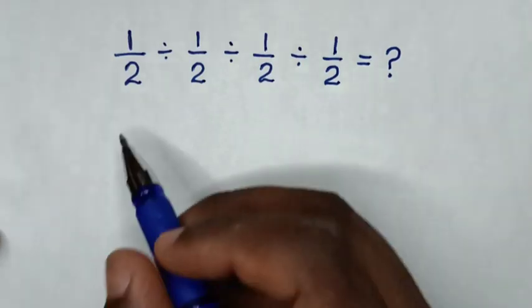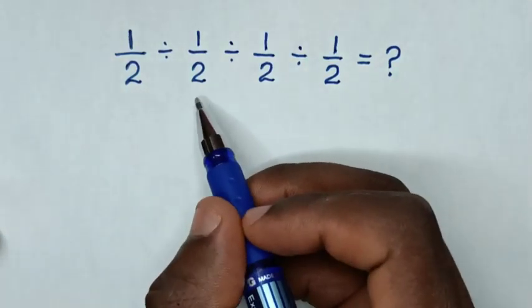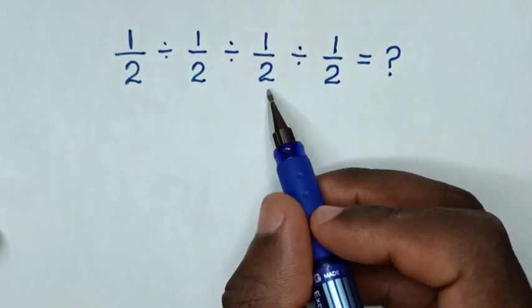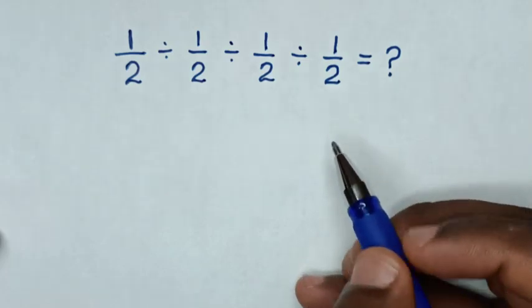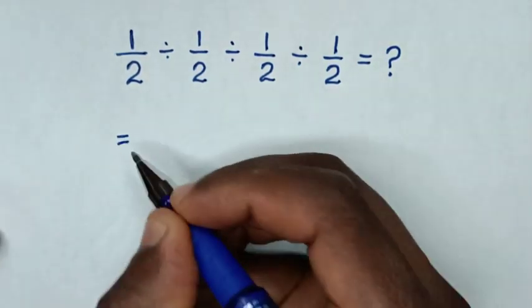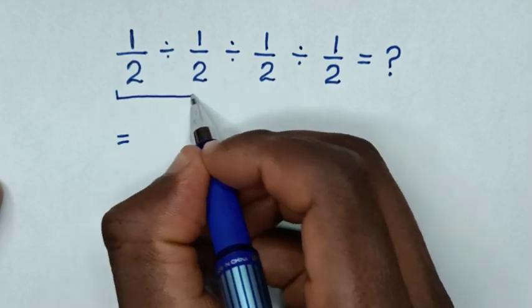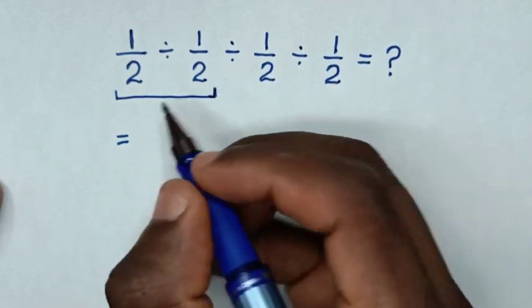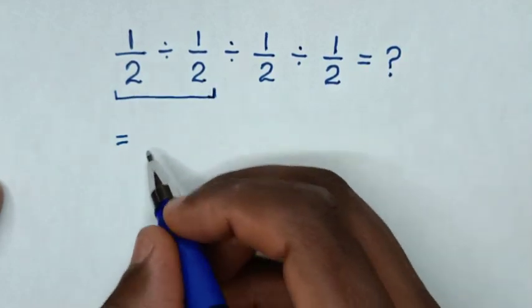Hello! How to solve 1 over 2 divided by 1 over 2 divided by 1 over 2 divided by 1 over 2. So it is equal to — first we start to deal with this first operation: 1 over 2 divided by 1 over 2.